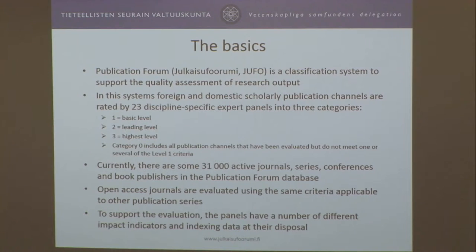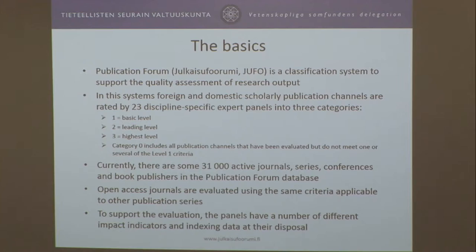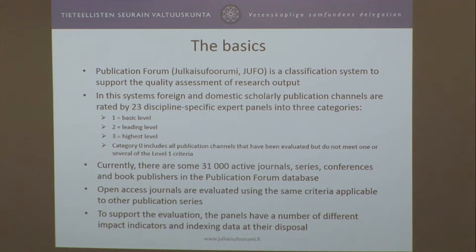Currently our database consists of more than 31,000 active journal series, conferences and book publishers. In the system, open access journals and publication channels are evaluated using the same criteria as any other — so not upgraded or downgraded.